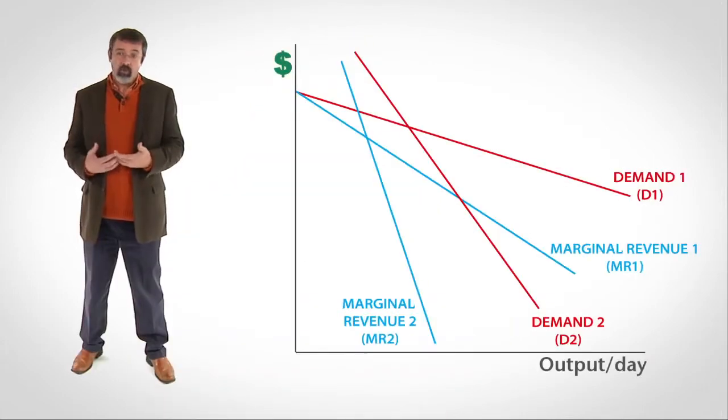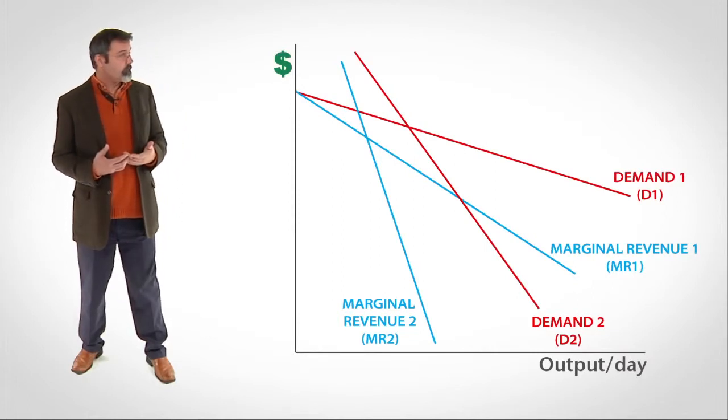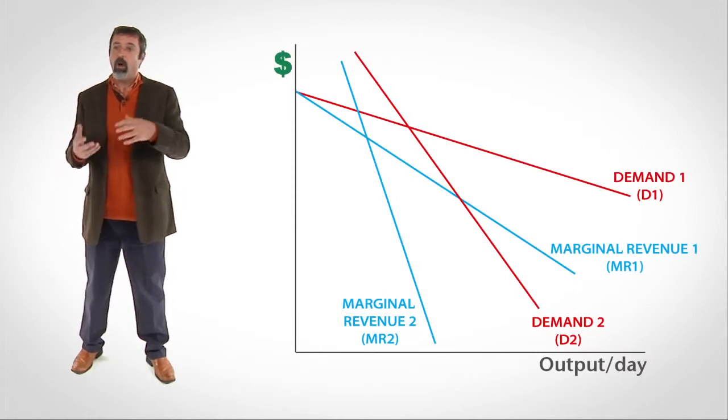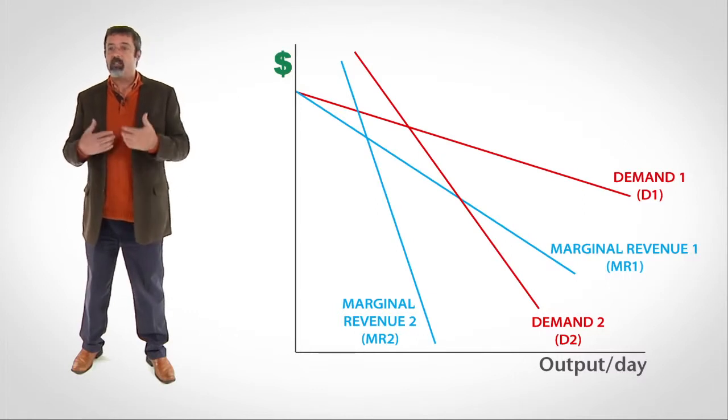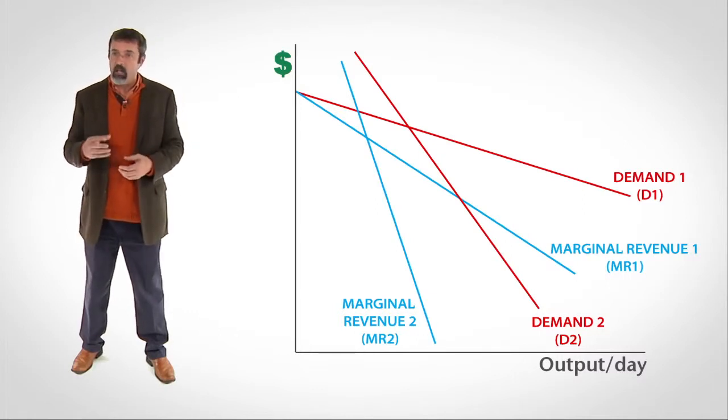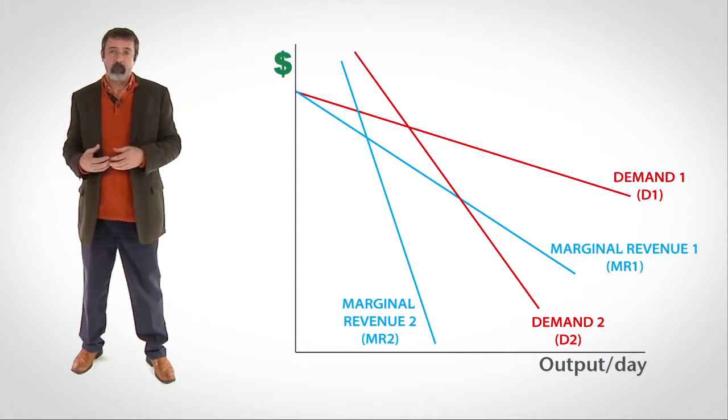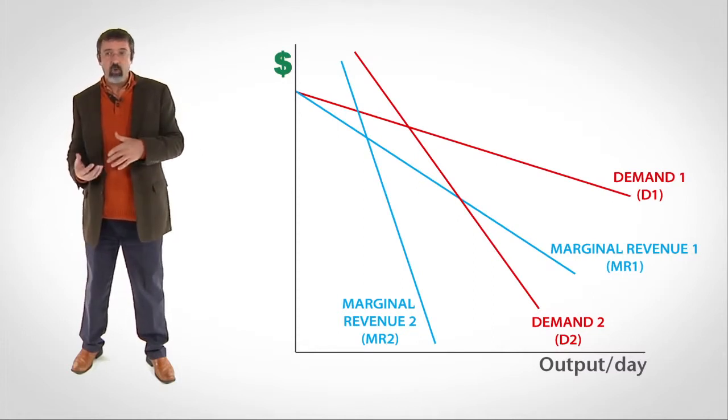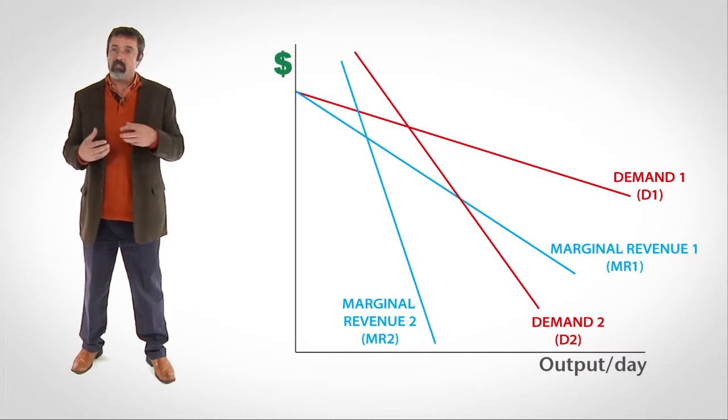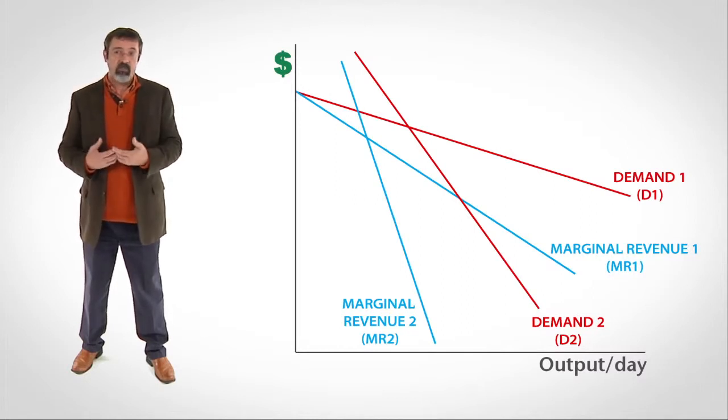Here are the two demand curves the oligopoly firm faces. The curves marked D1 and MR1 are the demand and marginal revenue curves the oligopoly faces when it attempts to raise its price. The curves marked D2 and MR2 are the demand and marginal revenue curves the oligopoly faces when it attempts to lower its price.